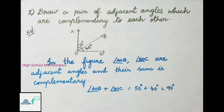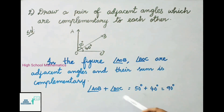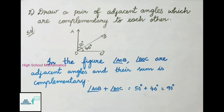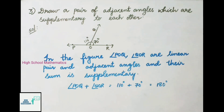Angle AOB plus angle BOC equals 50 degrees plus 40 degrees, which equals 90 degrees — a complementary angle. Therefore angle AOB and angle BOC are adjacent angles which are complementary to each other.